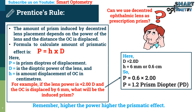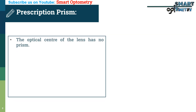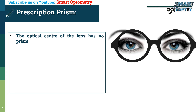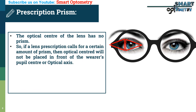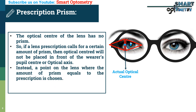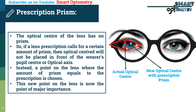Another question comes: since a decentered optical center creates prismatic effect, can we use a decentered ophthalmic lens as a prescription prism? Yes. The optical center of the lens has no prism, so if a lens prescription calls for a certain amount of prism, the optical center will not be placed in front of the pupil center or optical axis. Instead, a point on the lens where the amount of prism equals the prescription is chosen. This new point on the lens is now the point of major importance, or the new optical center for that particular patient.